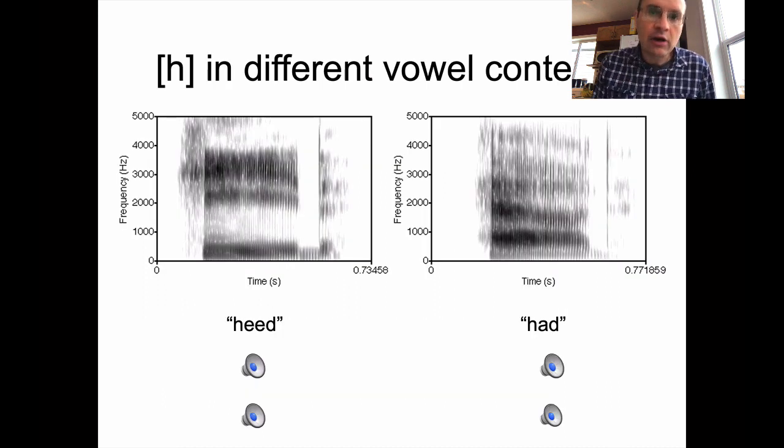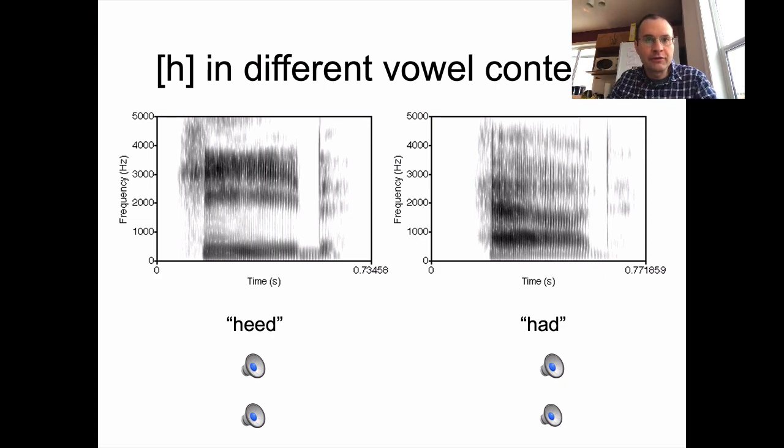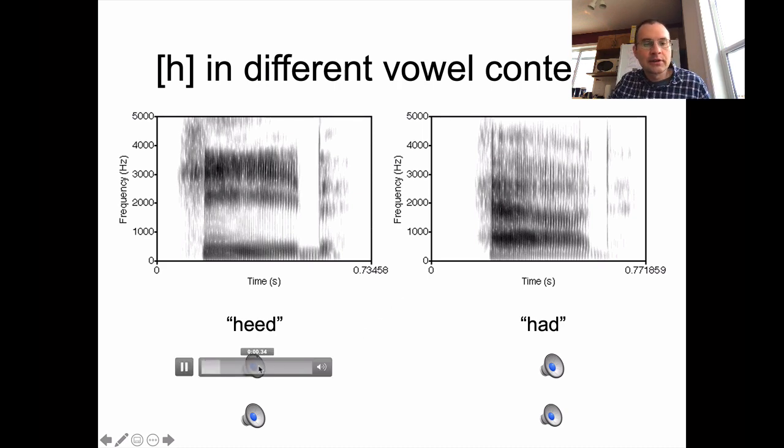To tell you a little bit more about what I mean with that, you can look at H in different vowel contexts. So it's a voiceless vowel and it's going to have different formant frequencies depending on which vowel it's co-articulated with. So these are the words heed and had. And we have the H part here at the beginning and then the vowel part in the middle.